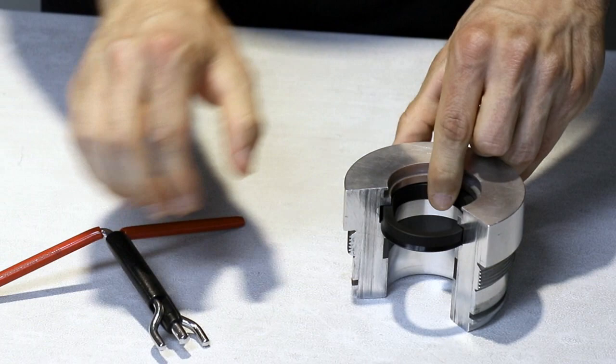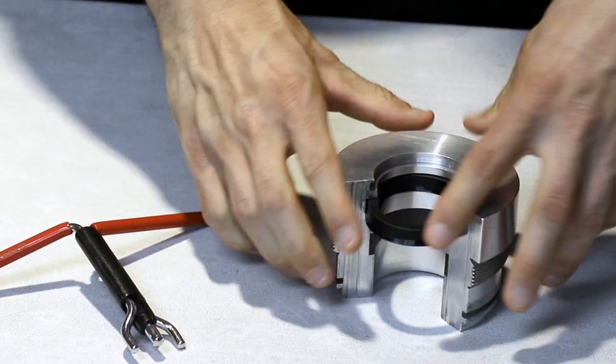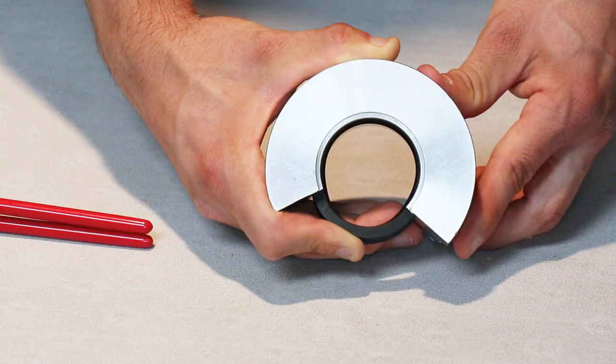If the seal still forms a loop, manually push or pop it into place. Ensure the seal is securely in place and does not have a kink in it.